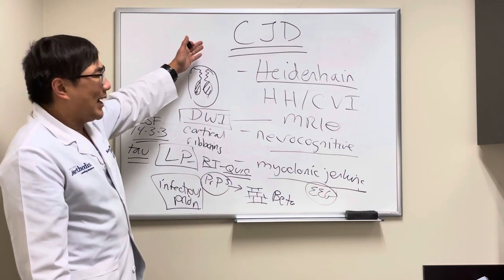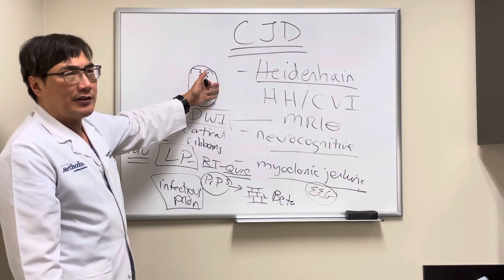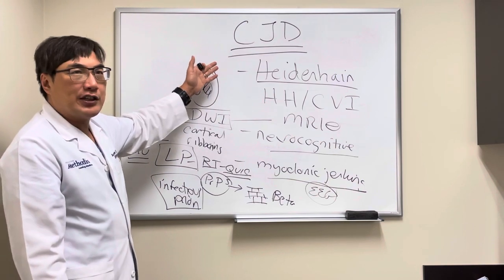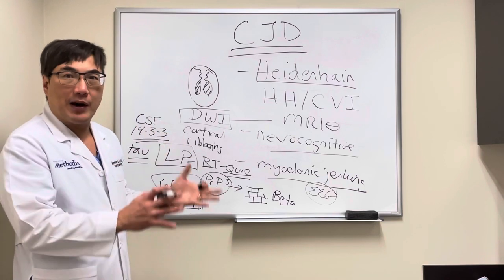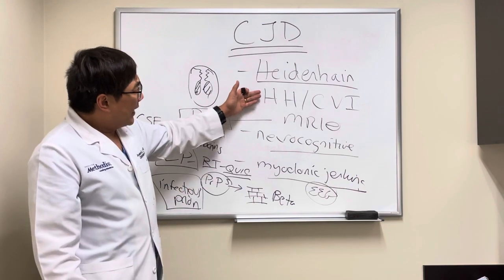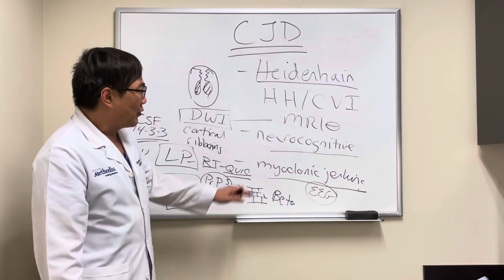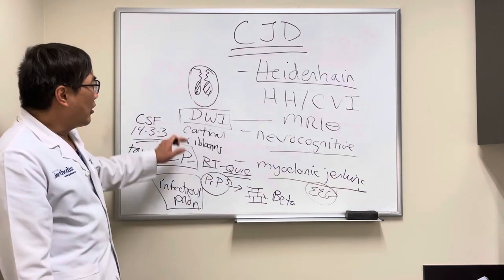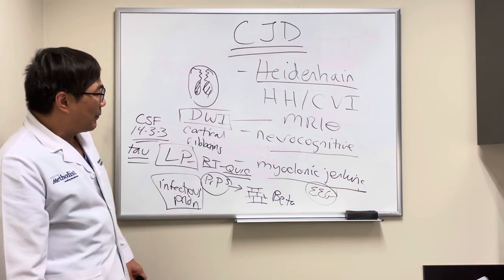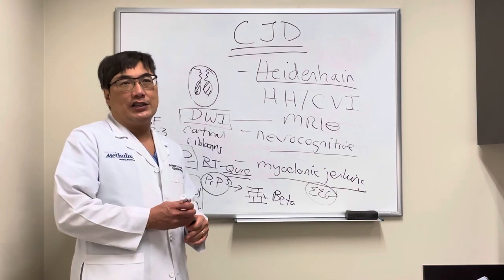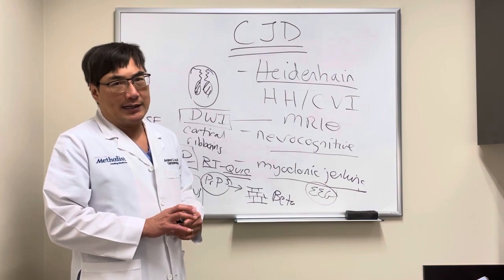You really have to have high suspicion for CJD in a rapidly progressive neurodegenerative disease with dementing illness that evolves over months instead of years. It comes to us as either unexplained homonymous hemianopsia or unexplained cortical visual impairment with a negative MRI. Over time, DWI shows the cortical ribboning. Think about RT-QUIC for the LP and CSF. Do an EEG. Of course, there's no treatment — it's more for diagnostic purposes.